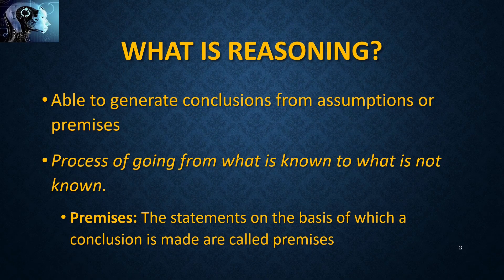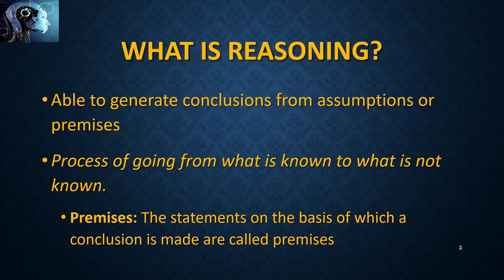Then, the reasoning is a process of obtaining conclusions based on premises. For an example, a crow is a bird — that is a premise or statement we have. Then we can conclude that a crow has two legs. That whole process we can call reasoning.